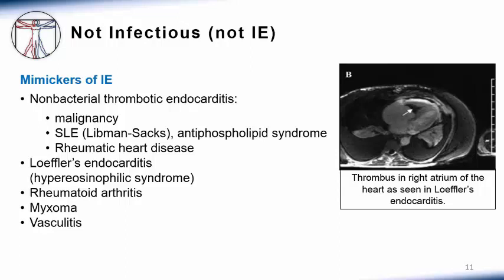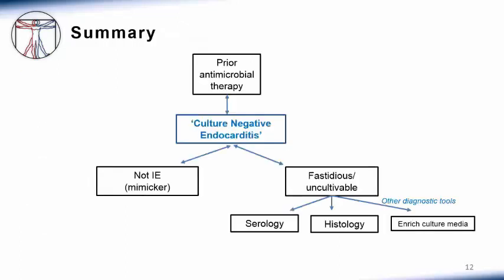Pictured here is a thrombus in the right atrium of the heart, as seen in Loeffler's endocarditis. In summary, blood culture-negative endocarditis requires consideration of three major possibilities. First, that the patient has already received antibiotics, which have inhibited growth of the pathogen in blood cultures. Second, that the pathogen is fastidious or not able to be grown on routine blood cultures, in which case other diagnostic tools are needed, such as serology, histology, enriching the culture media, and in some cases even gene sequencing. And finally, that the diagnosis is not infective endocarditis — rather, it is a mimicker of infective endocarditis.